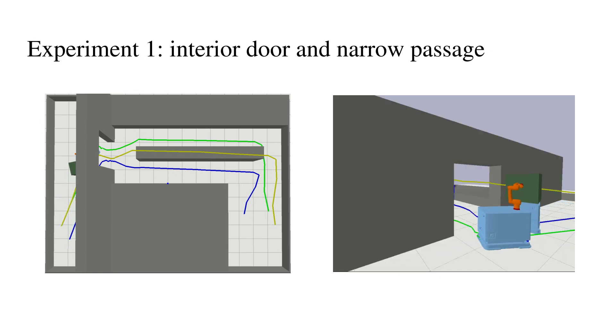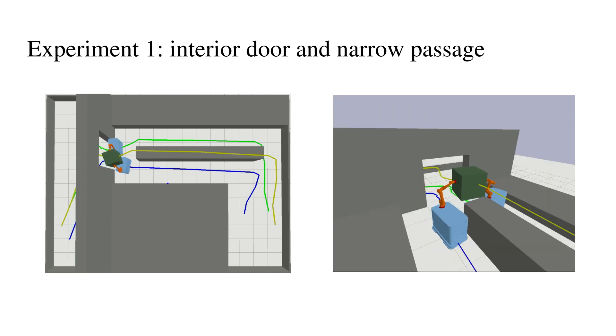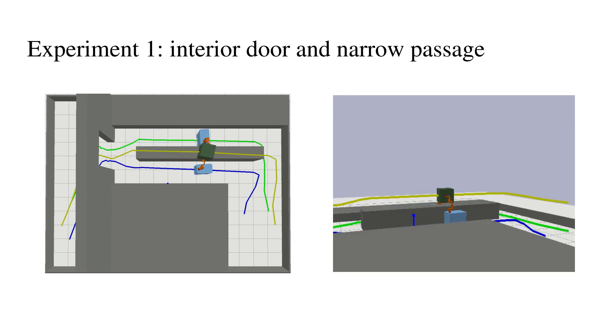In the first simulation, we demonstrate how two mobile manipulators pass through an interior door and a long narrow passage while maintaining contact with the object, which is to satisfy the closed-chain kinematic constraints.